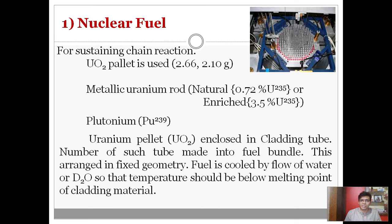Natural uranium generally contains just 0.72% uranium-235, which is fissile, while the rest is uranium-238, which is not fissionable. Some nuclear reactors use enriched uranium containing around 3.5% uranium-235. For defense purposes such as atomic bombs, enriched uranium contains around 10 to 20% uranium-235, but in nuclear power plants, we use a maximum of 3.5% uranium-235.